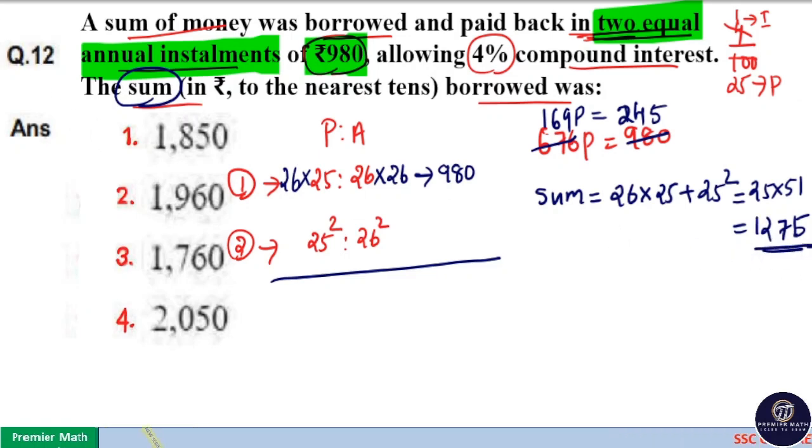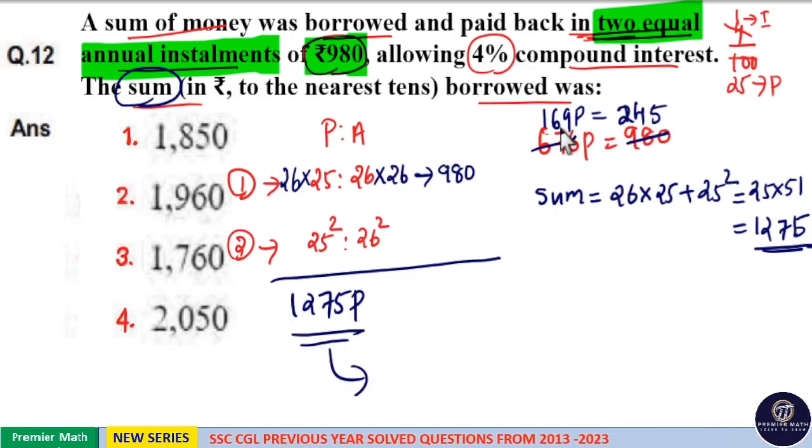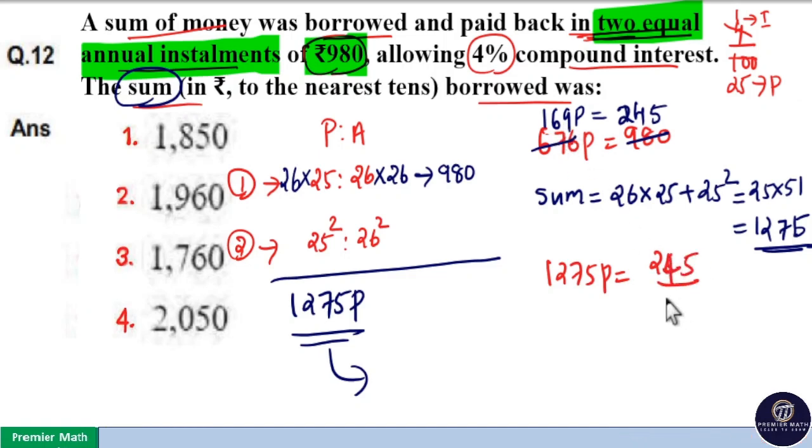1275 parts is the sum. So we need to find out what is 1275 part here. Here 169 part is equal to 245. Then 1275 part is equal to 245 divided by 169 into 1275.